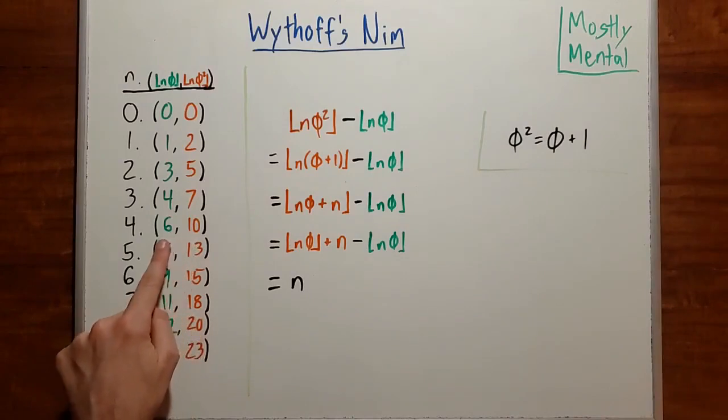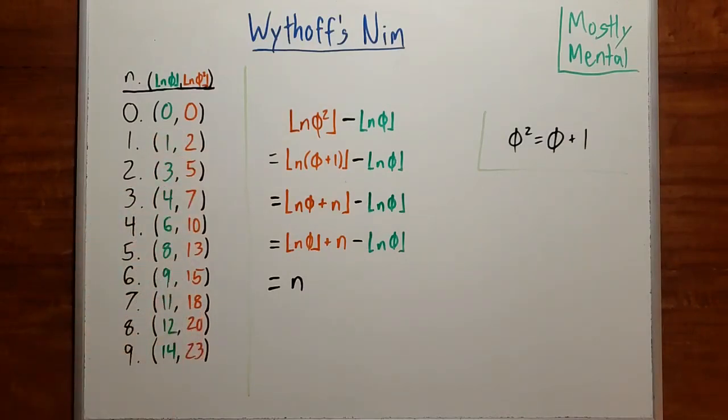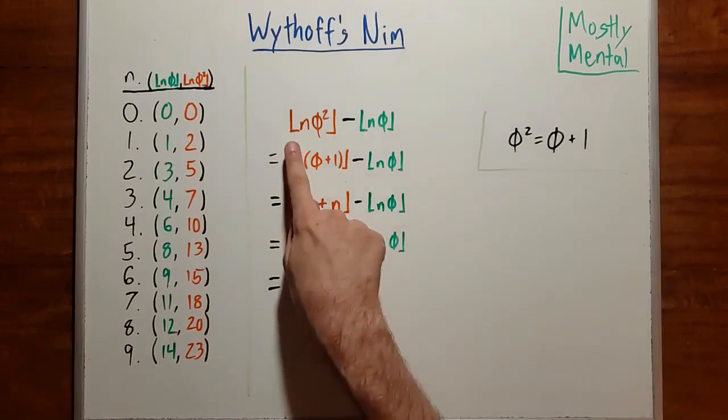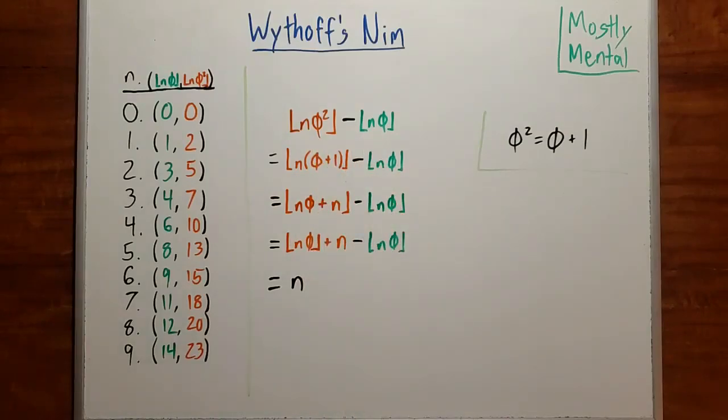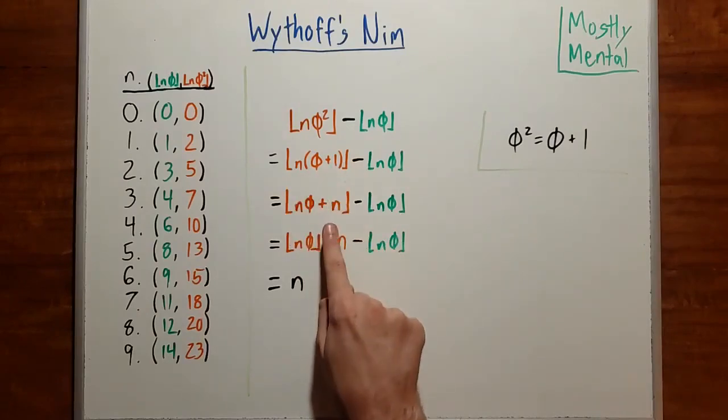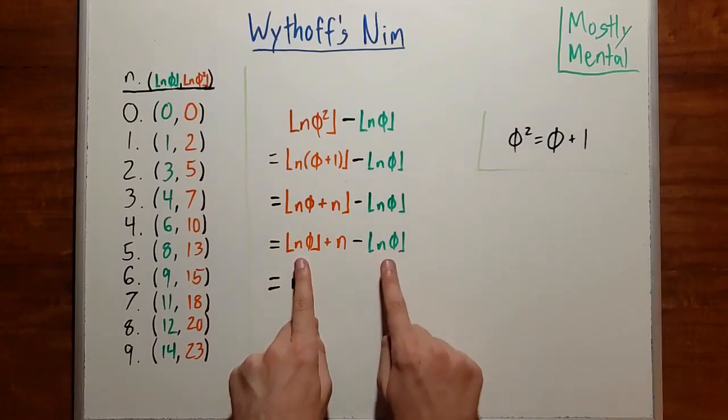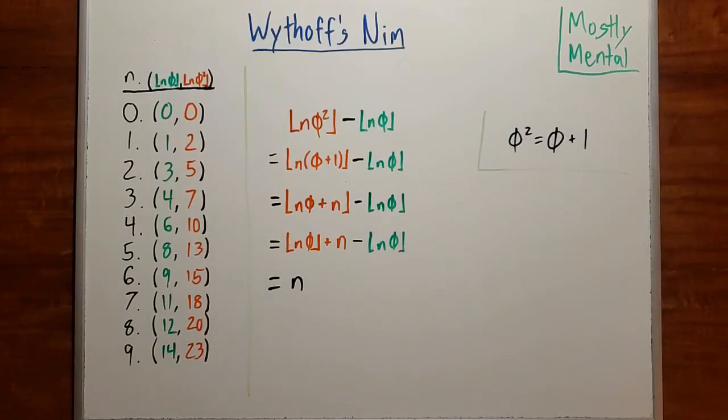If we look at the differences between the y and x coordinates for each of our points, then we get 0, 1, 2, 3, 4, and so on. Why does that happen? Well, the nth difference is the floor of n phi squared minus the floor of n phi. And the defining feature of the golden ratio is that phi squared is phi plus 1. So we can substitute that in and distribute the n, and n is a whole number, so we can bring that out of the floor. And then the floor of n phi cancels with the minus floor of n phi, leaving us with just n. So the nth difference is n. And if we swap the order of the coordinates, which means looking at points on the lower line, that gives us a difference of negative n. That means not only do we get every whole number once as an x coordinate and a y coordinate, we also get every integer once as a difference between the two.